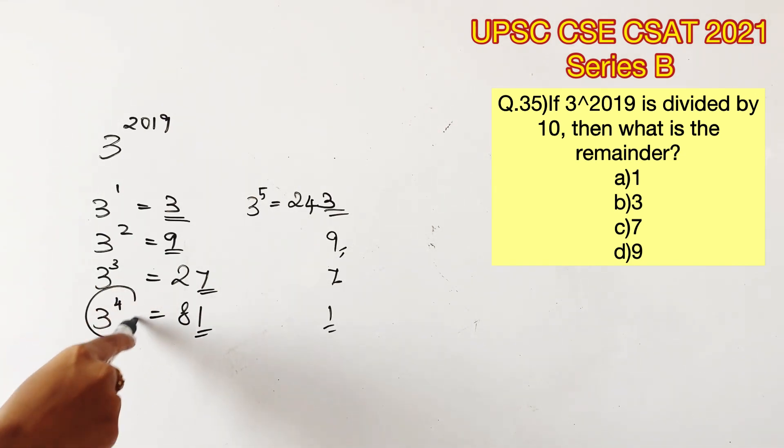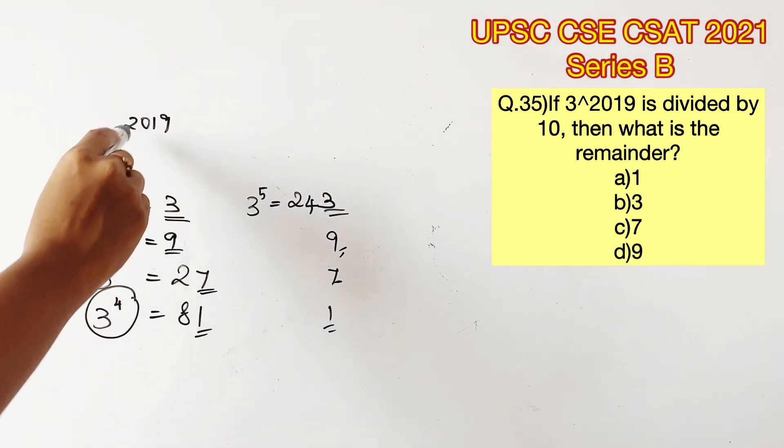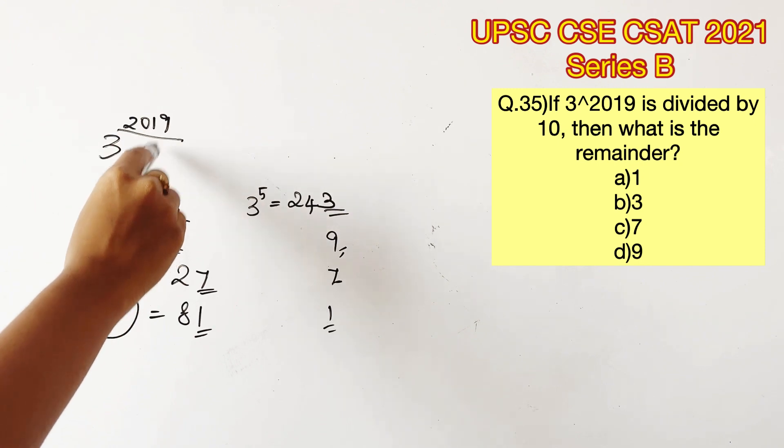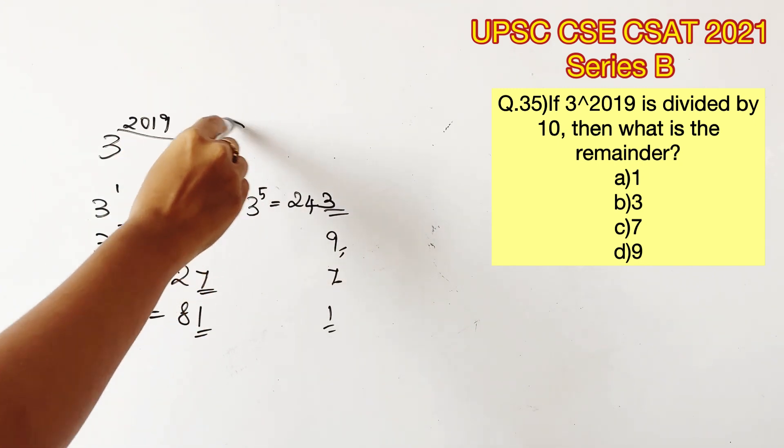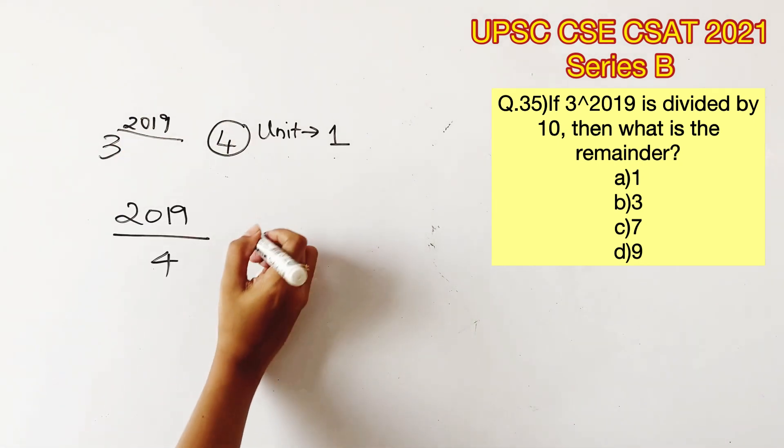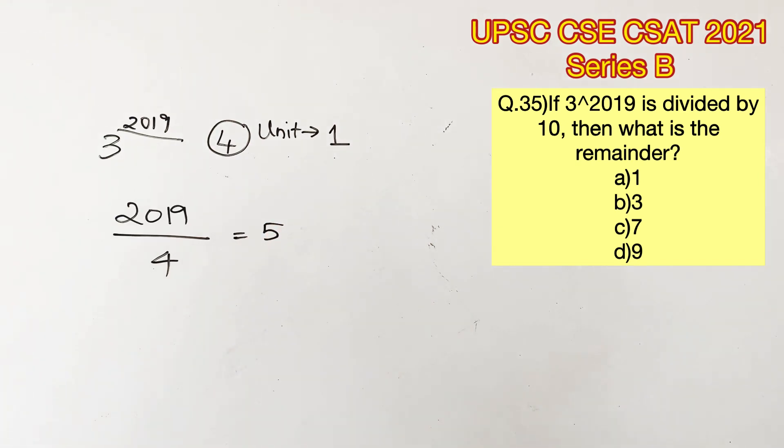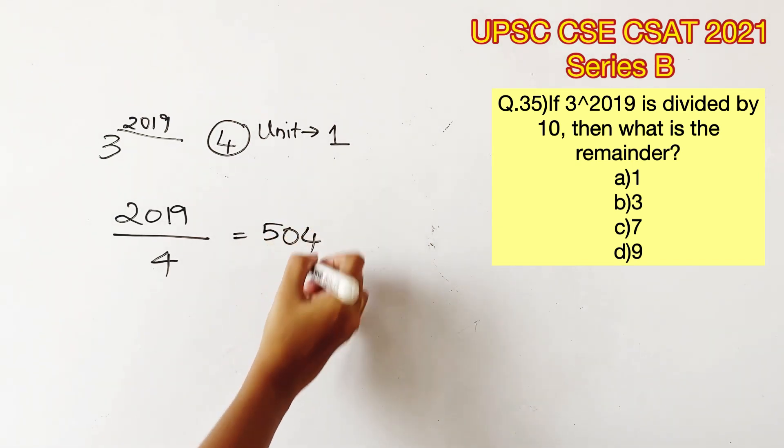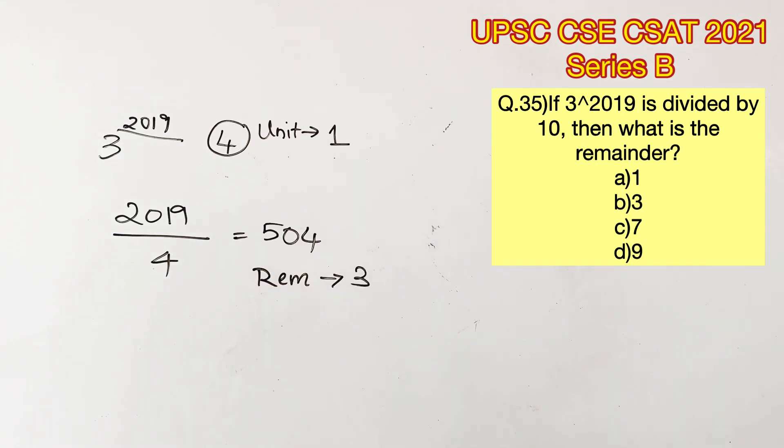Which means 3 power 4 and 3 power multiples of 4 will have 1 in its unit's place. Now all we have to do is break this number down in batches of 4. So 2019 divided by 4 will give us 5, 4s are 20, 0 and 4, 4s are 16. We have a remainder of 3 now.